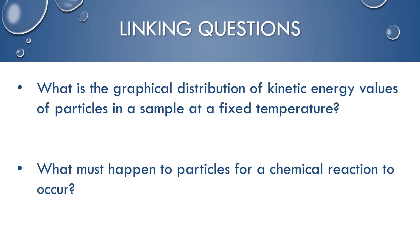If this is not your first chemistry class, you can start thinking about these linking questions. In your intro to chemistry class, hopefully you talked about there's a graphical distribution of kinetic energy values of particles in a sample at a particular temperature. This is called a Maxwell-Boltzmann distribution curve. We will get to that later in the curriculum. But it does help us relate the distribution for the kinetic energy values. If this is not your first chemistry class, you should go back and look at those distribution curves. Our other linking question here, what must happen to particles for a chemical reaction to occur? Think back to your previous chemistry class. You can also look back at structure 1.1.1, where the difference is with the chemical reaction and physical changes.